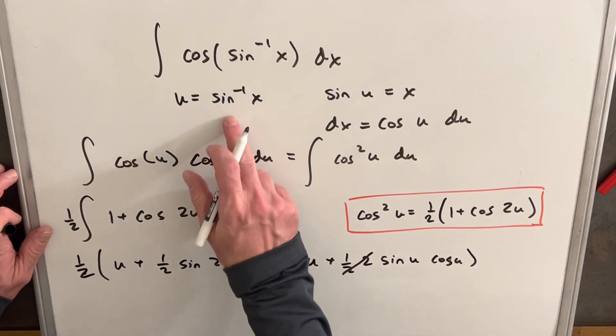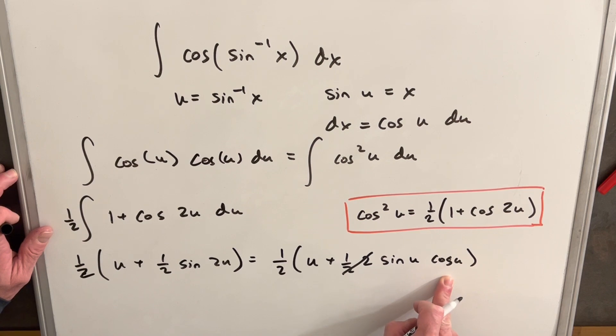Then we're almost set. We know what u is, we know what sine of u is, we don't know what cosine u is. So let's just find that real quick.